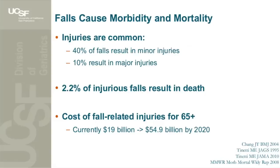Falls are a leading cause of morbidity and mortality among older adults. Forty percent of falls result in minor injuries. Ten percent result in major injuries such as fractures, traumatic brain injuries, and lacerations. Two-point-two percent of injurious falls result in death. The cost of fall-related injuries for older adults is currently estimated at $19 billion, which is projected to balloon to almost $55 billion by 2020. These injuries, deaths, and costs represent an enormous burden to patients, society, and our healthcare system.